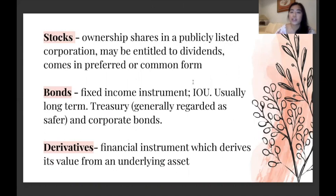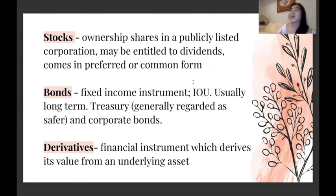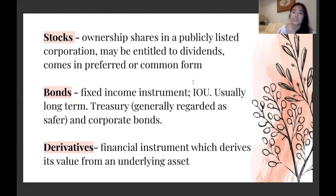Stocks are ownership shares in a publicly listed corporation — you may be entitled to dividends depending on company earnings, and they come in preferred or common form. Preferred stocks are sold at a premium, so slightly more expensive, but your yield is likely higher, and upon liquidation or bankruptcy you are ahead of common stockholders. Bonds are fixed income instruments or an IOU — whoever the bond issuer is owes the bondholder a certain amount of money, usually very long term. Treasury bonds from the government are generally regarded as safer than corporate bonds issued by companies.